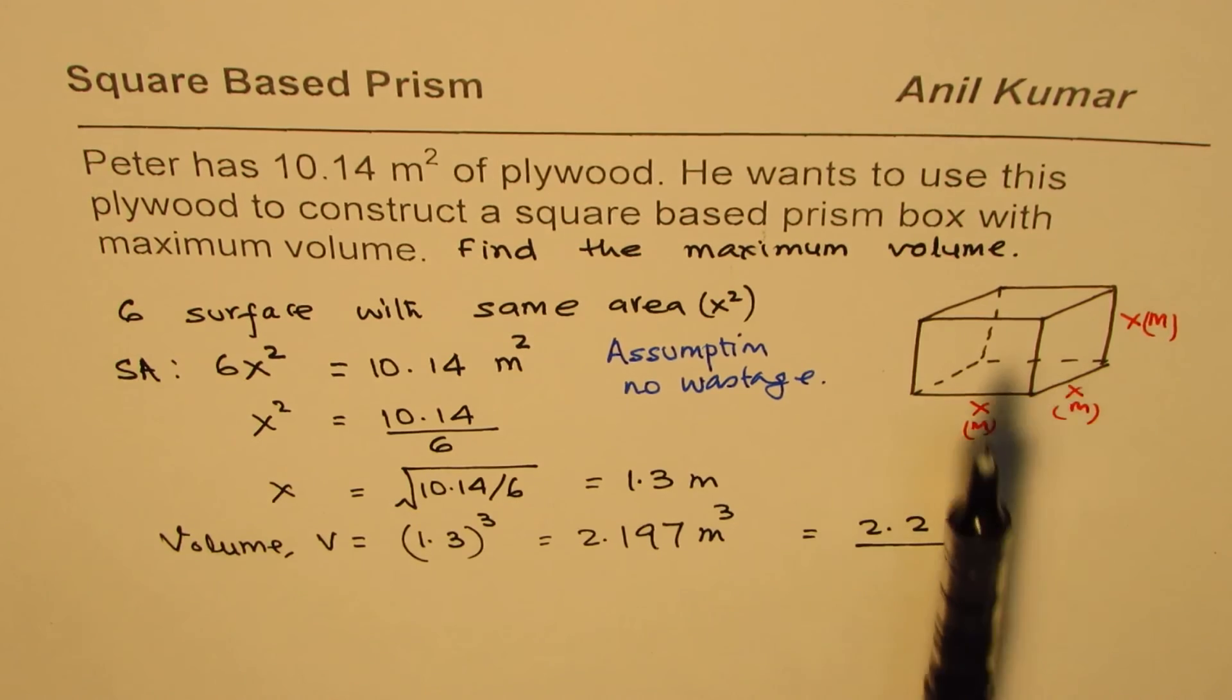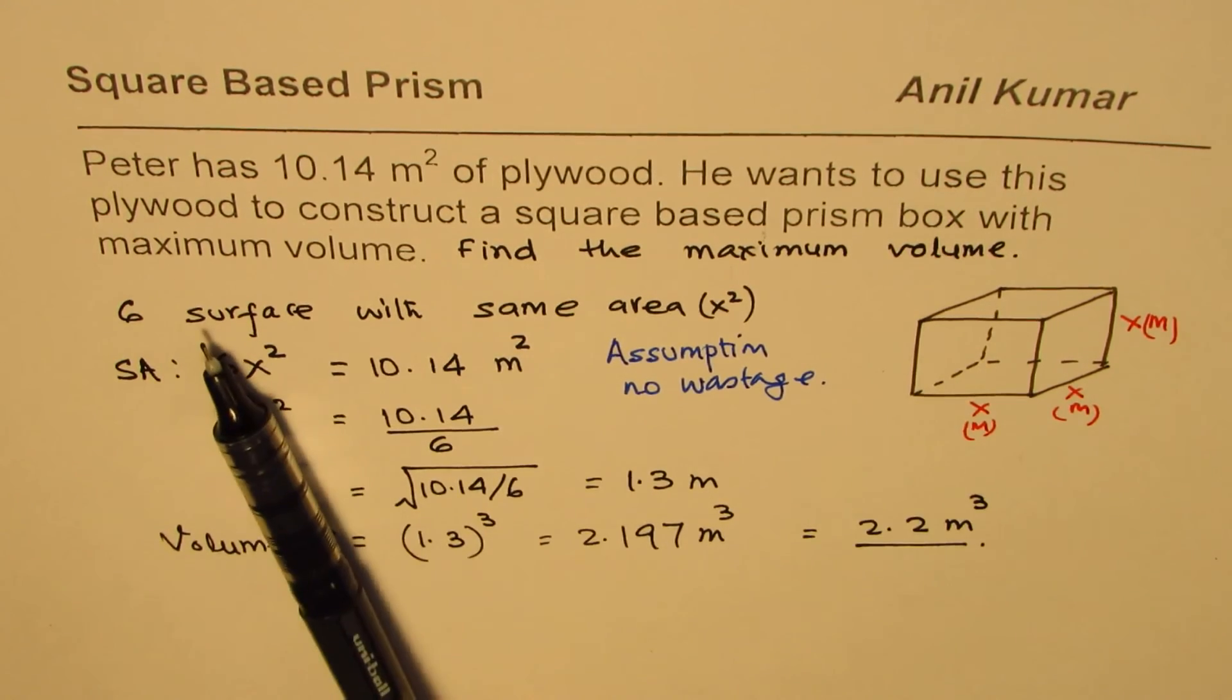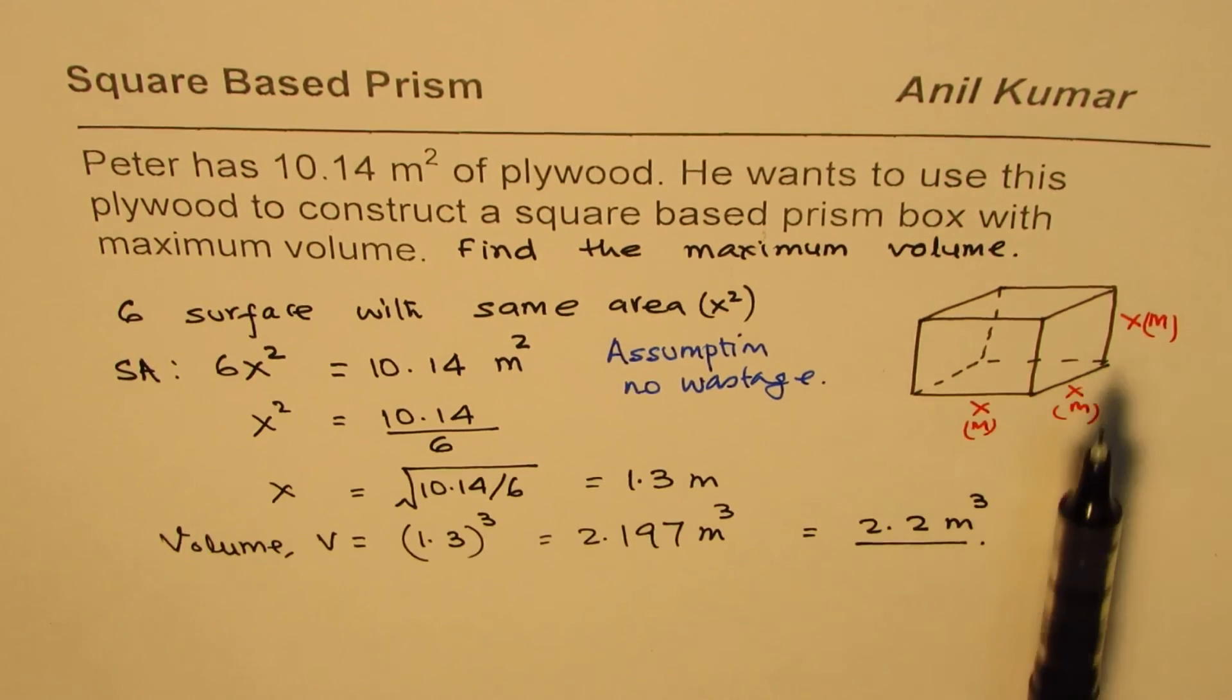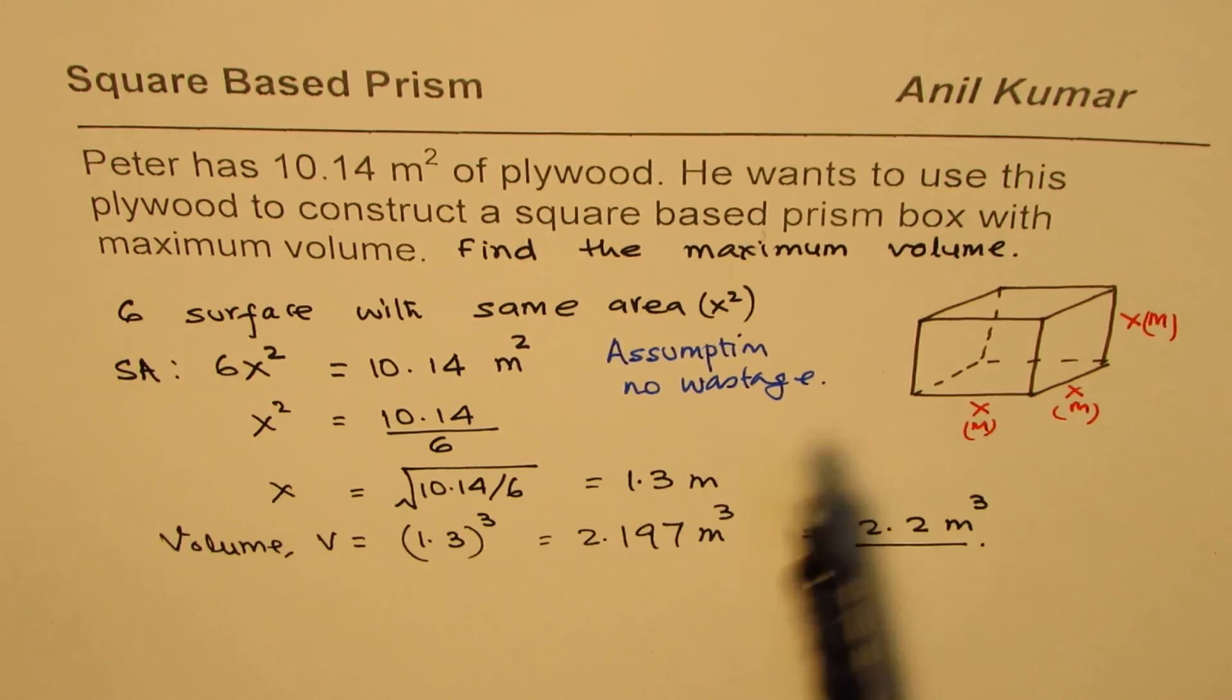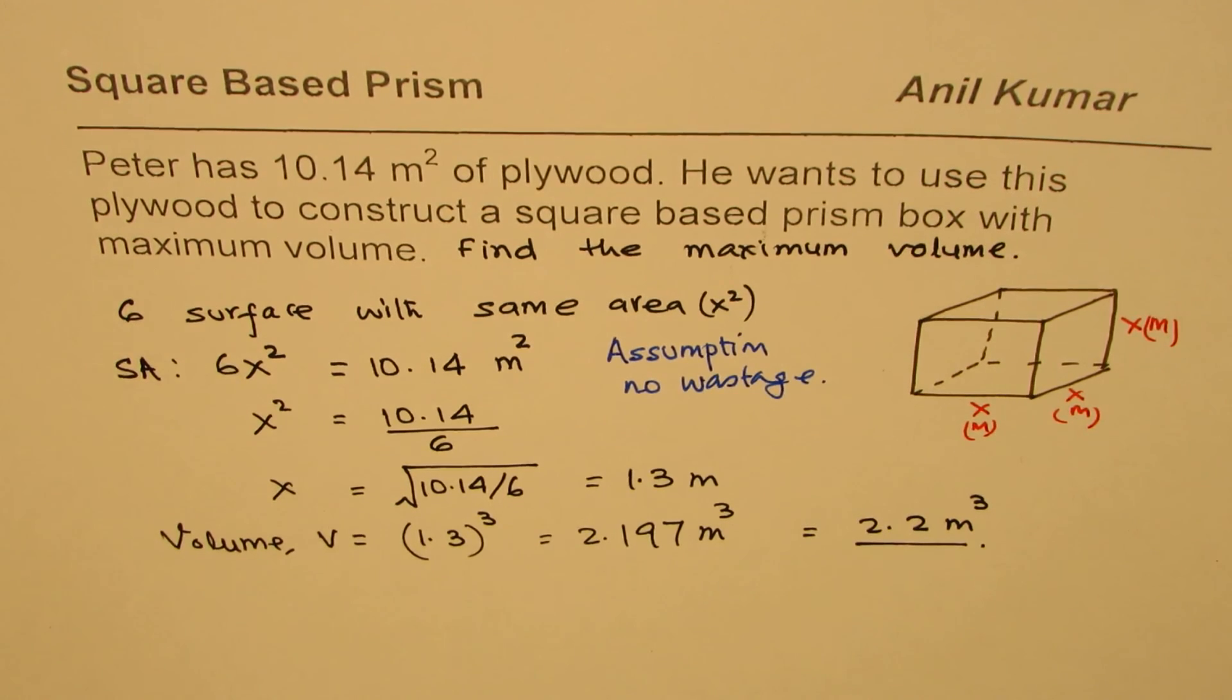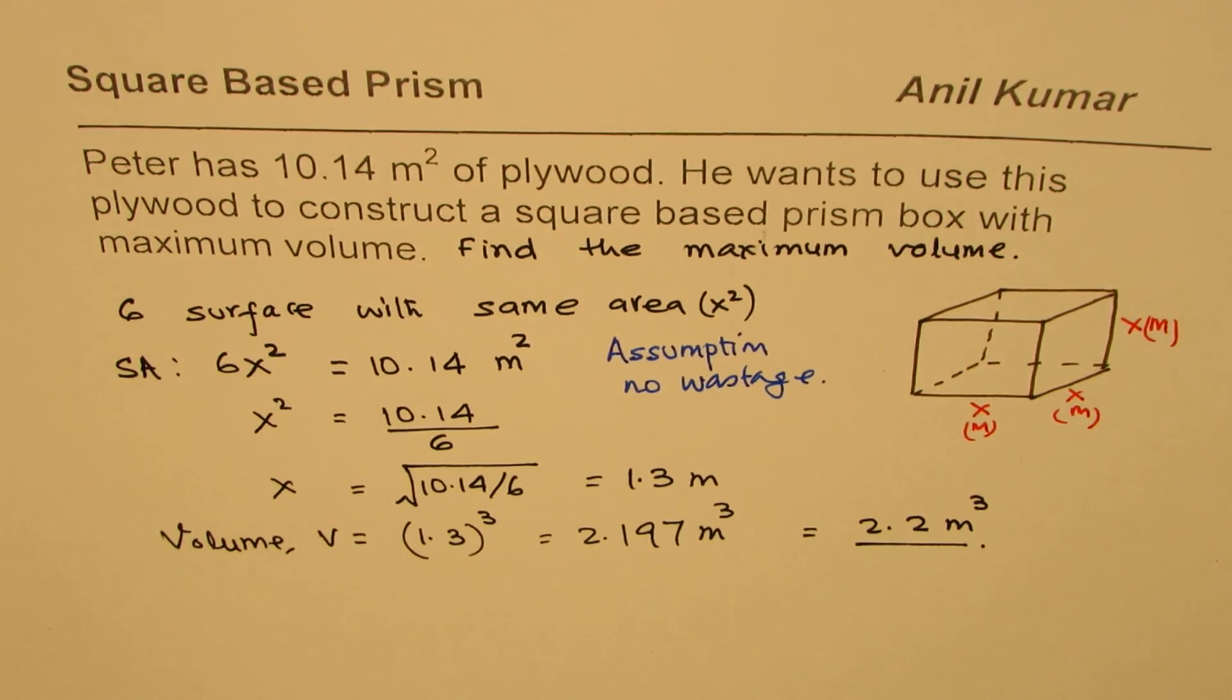The idea is from the surface area of the material we know we are creating six surfaces of exactly the same area, each being X squared. Once you find the dimensions, volume is the product of length, width, and height. I'm Anil Kumar. You can always share and subscribe to my videos. Thank you and all the best.